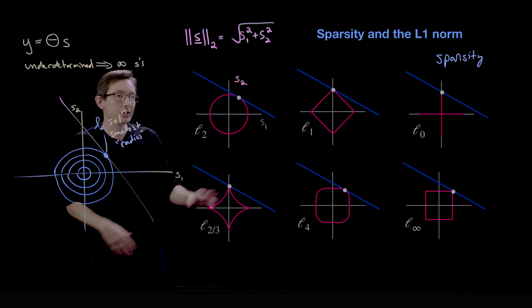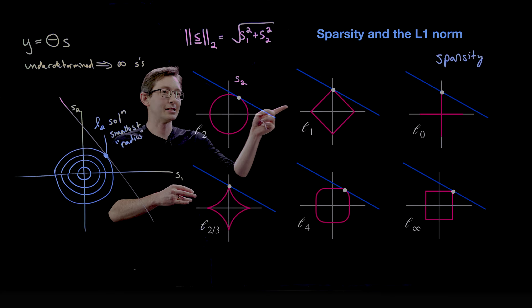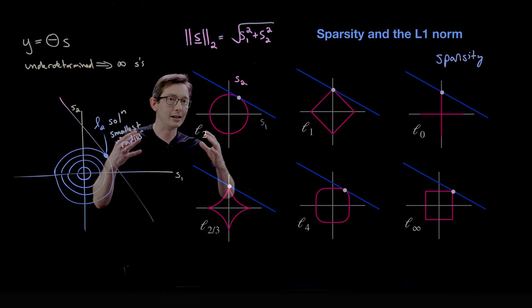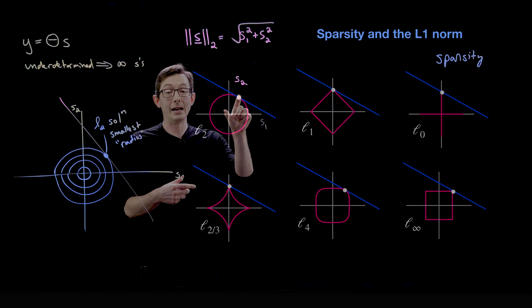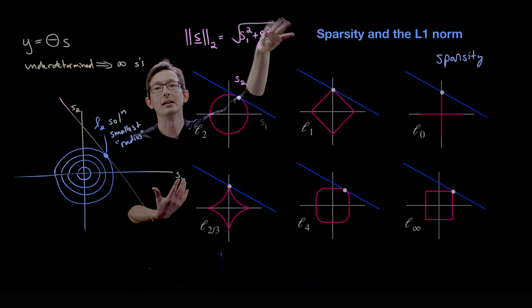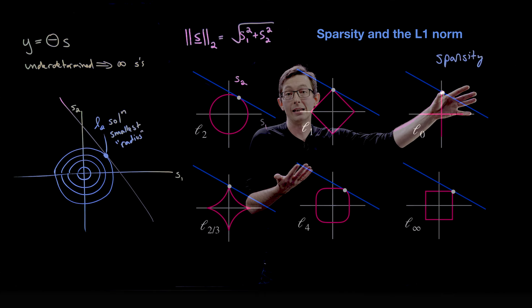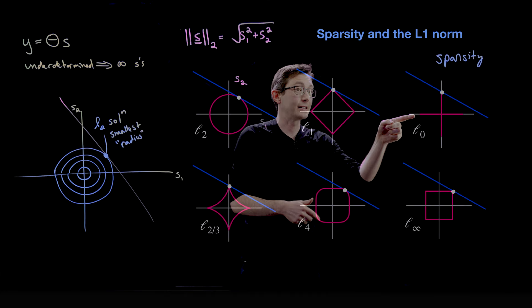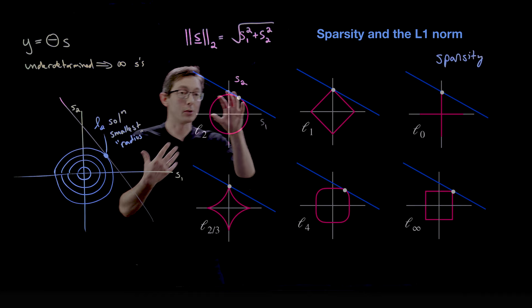I'll show these other norms because it's fun. I always joke with my students: this diamond is a circle in the one-norm, this square is a circle in the infinity norm, and this is a circle in the four-norm. Your intuition of what a circle is comes from measuring distance with the two-norm — the Pythagorean distance. But in the taxicab norm, equal-distance points form a different shape entirely.